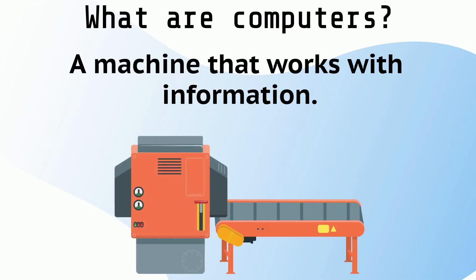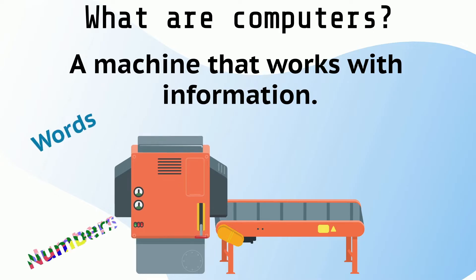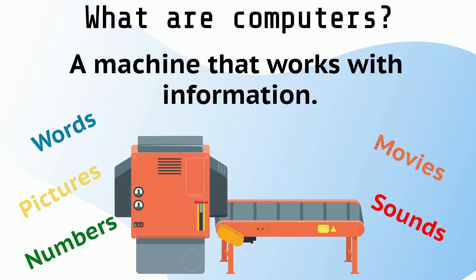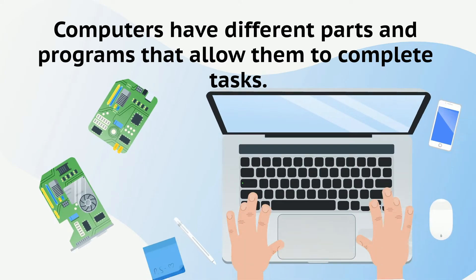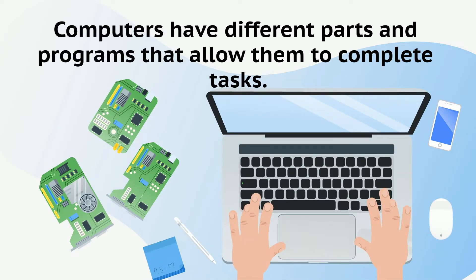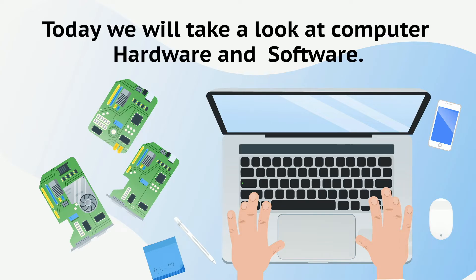A computer is a machine that works with information. This information can be words, numbers, pictures, sounds, or movies. Computers have different parts and programs that allow them to complete tasks. Today we will take a look at computer hardware and software.